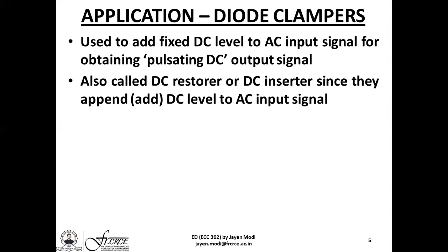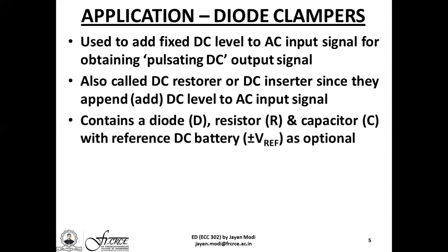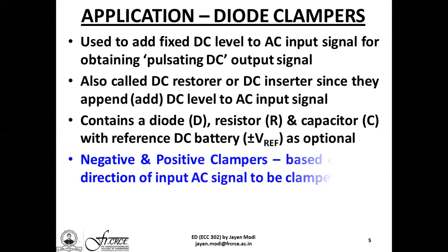From the structural point of view, diode clamper circuits contain a PN junction diode, a resistor, and also a capacitor — something which was not present in the diode clipper section. You can also have a reference DC voltage as an optional circuit element. This reference DC battery voltage can be either positive, designated as +Vref, or negative, designated as −Vref. Clampers can be mainly classified into positive clampers or negative clampers, based on the direction of the input AC signal to be clamped.